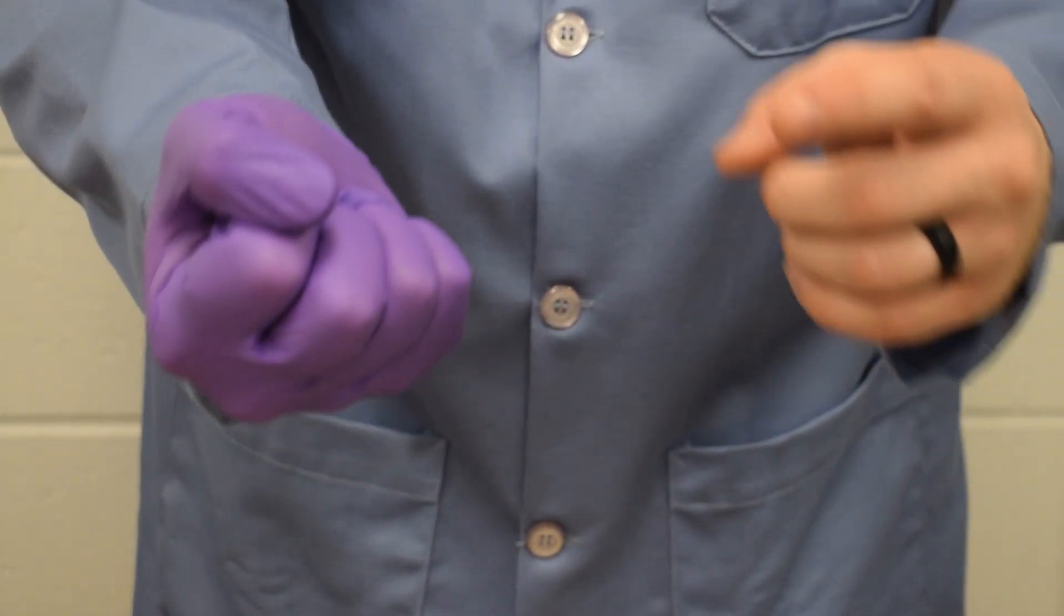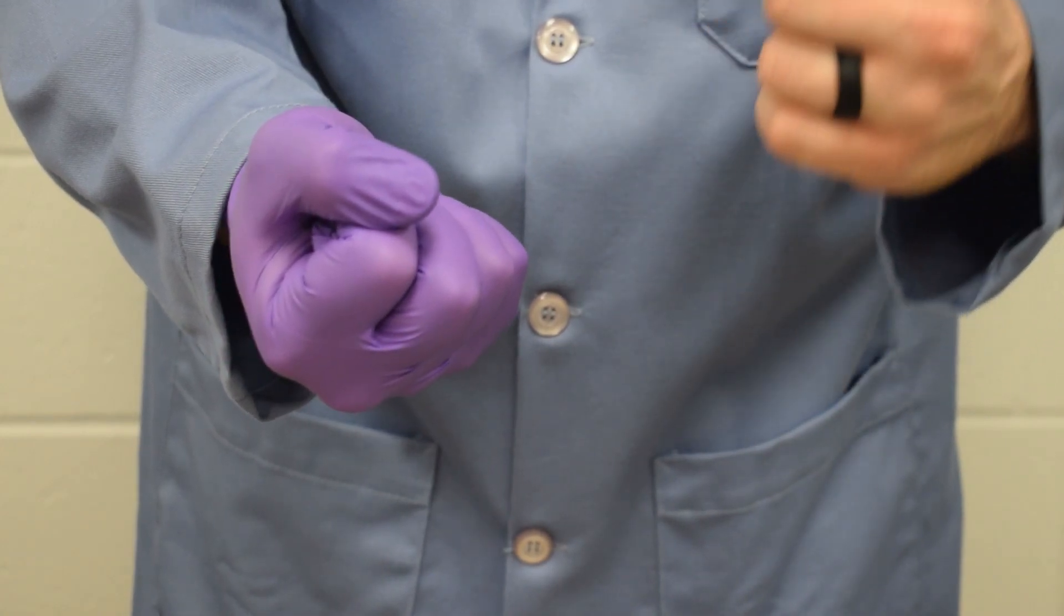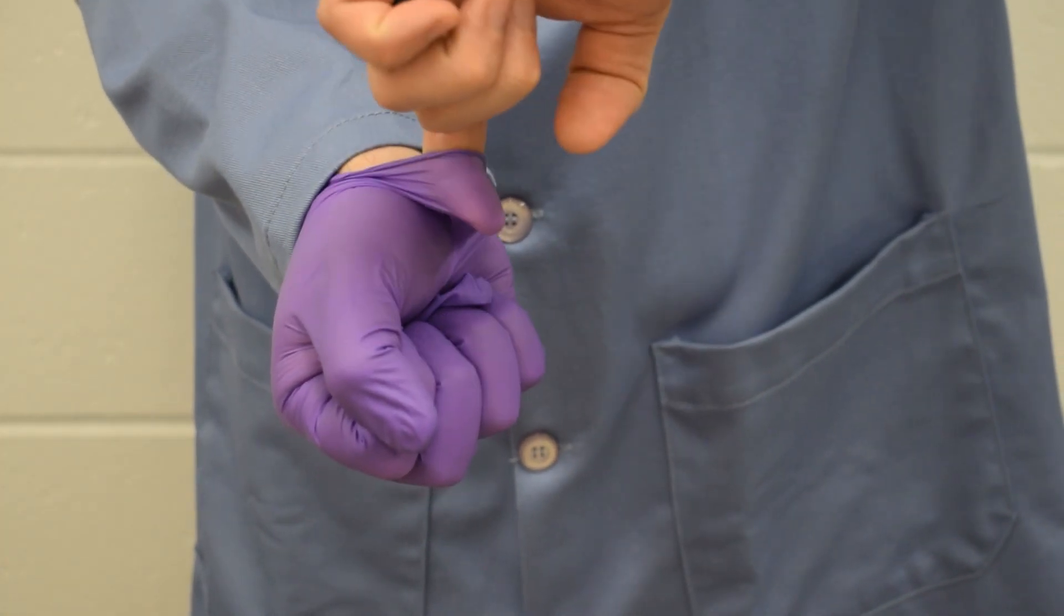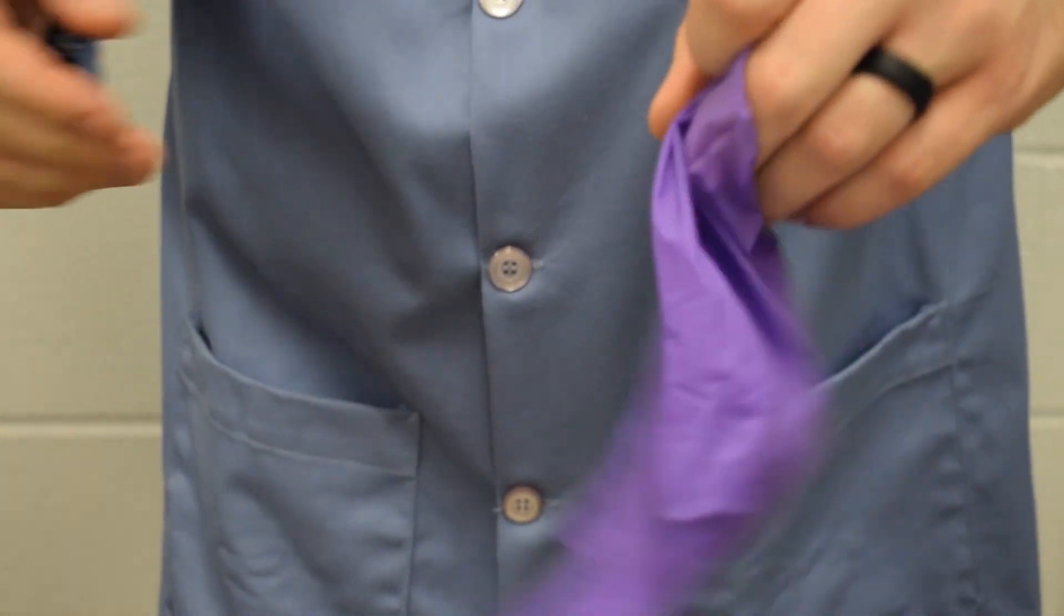Then, slide the index finger of your ungloved hand beneath the cuff of the glove that you're still wearing. Use your index finger to peel off the glove, again turning the glove inside out as it is removed.